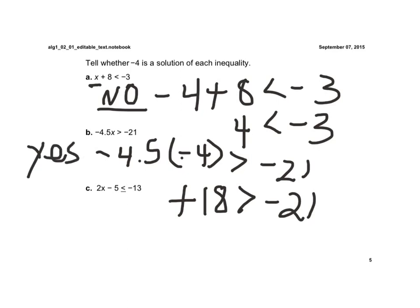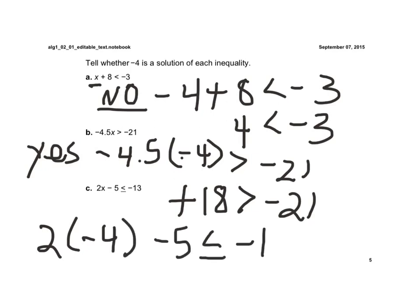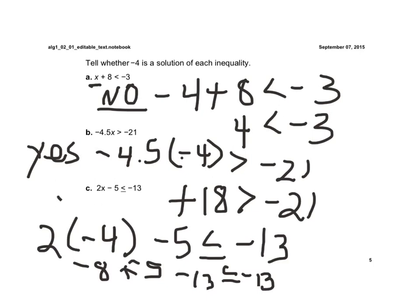If we look at letter C, we have 2 times negative 4 minus 5, which has to be less than or equal to negative 13. Well, that's negative 8 minus 5, and using keep-change-change, that becomes negative 13, which is less than or equal to negative 13. Since this is less than or equal to, and negative 13 equals negative 13, this one is also yes.